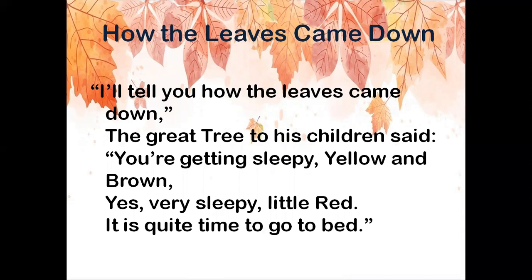Before we read the poem, let me give you a quick summary. In this poem, you will find that the poetess has used personification. Personification is a poetic device in which we treat non-living things as persons. While reading this poem, we will notice that the poetess has used the term 'father' for the tree and 'children' for the leaves.